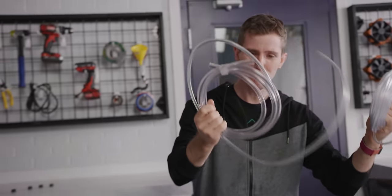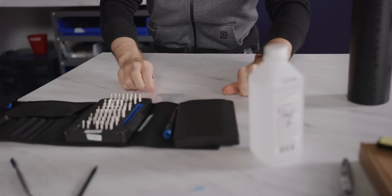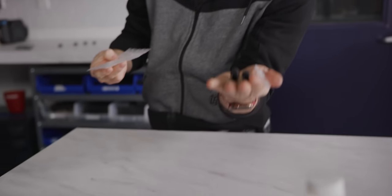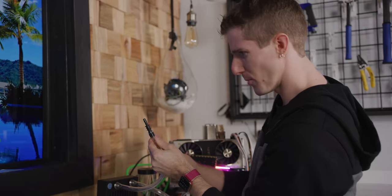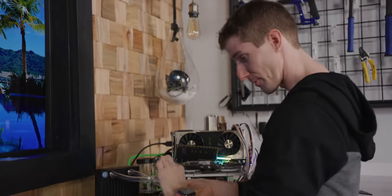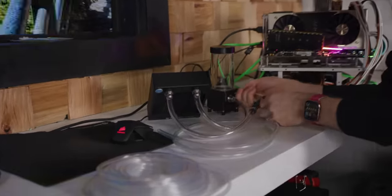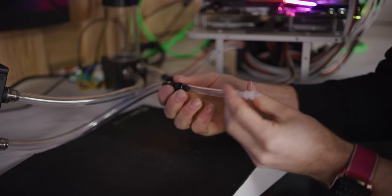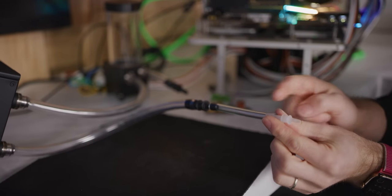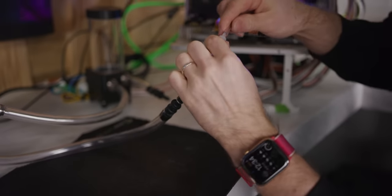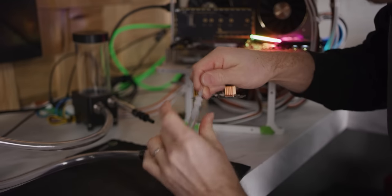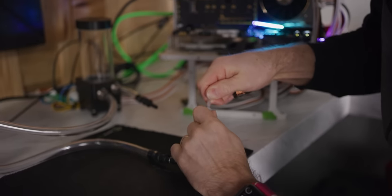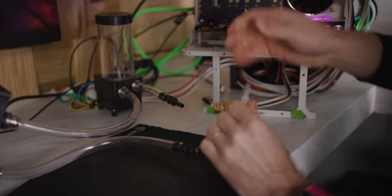Fortunately, we have many different tubings and a handful of adapters. Adapter number one takes us from three-eighths inch on our normal water cooling equipment down to quarter inch. Adapter number two takes us from quarter inch down to little tiny. I think this is one-eighths inch. It might be even smaller.